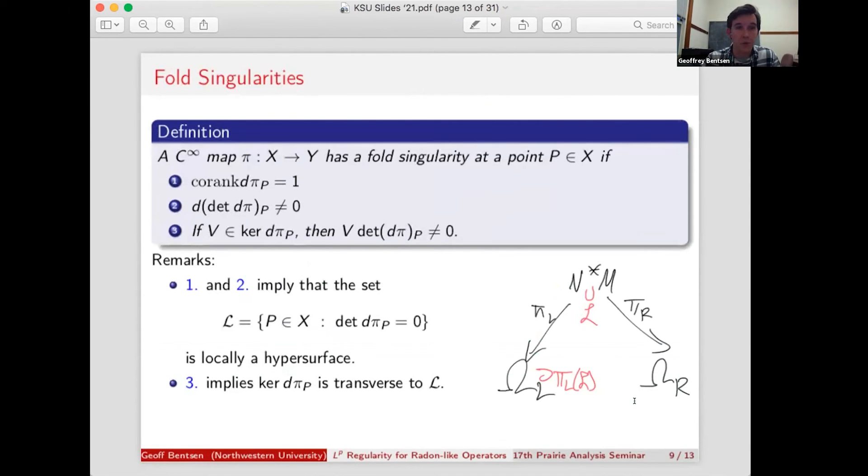So what is a fold singularity? A smooth map has a fold singularity if, first off, the rank of the differential of that map drops by as little as possible, it has to drop by at least one. So the co-rank is one. Second, the determinant of the differential should vanish only to order one. And third, in particular, the determinant of the differential vanishes to order one in the direction of the kernel of the differential.